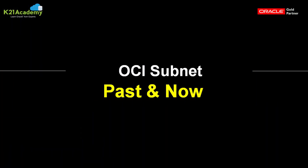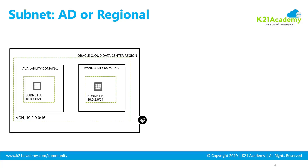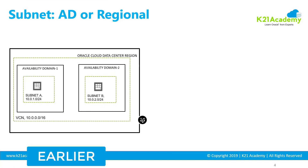Now let's look at the scope of subnet earlier and what's being added now. As you can see in this diagram, the subnet is created within an availability domain. Subnet A is within availability domain 1, and Subnet B is within availability domain 2. Which means earlier, the subnet was scoped within an availability domain — it can reside within one availability domain but can't go across availability domains.